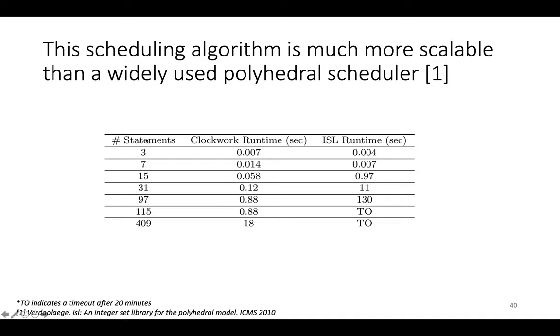To compare runtimes, we took several applications with 3, 7, 15, 31, 97, 115, and 409 statements, an increasing number over a wide range. We compared the runtime of the Clockwork algorithm to ISL, a classic polyhedral scheduling and analysis tool with an algorithm that's a descendant of the Pluto algorithm. We set a timeout of 20 minutes and measured the runtimes of Clockwork and ISL.